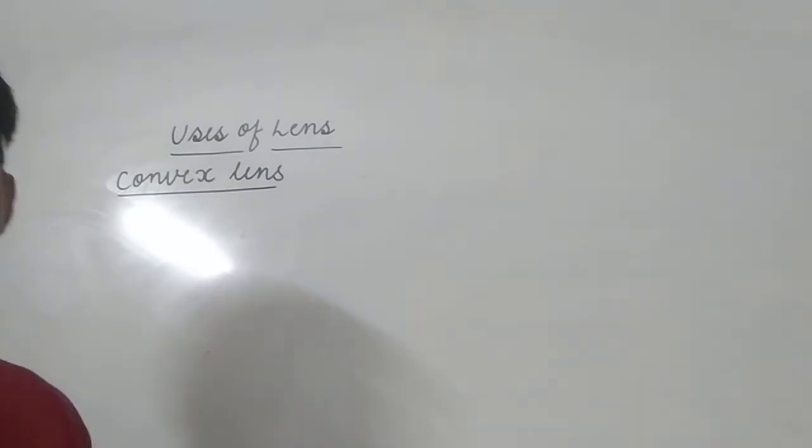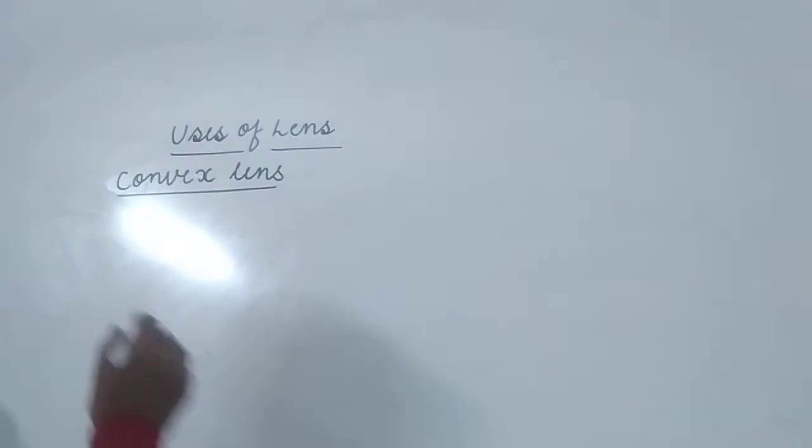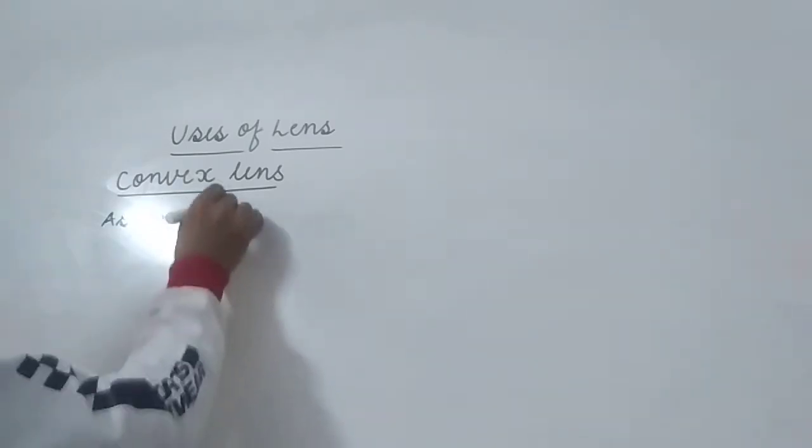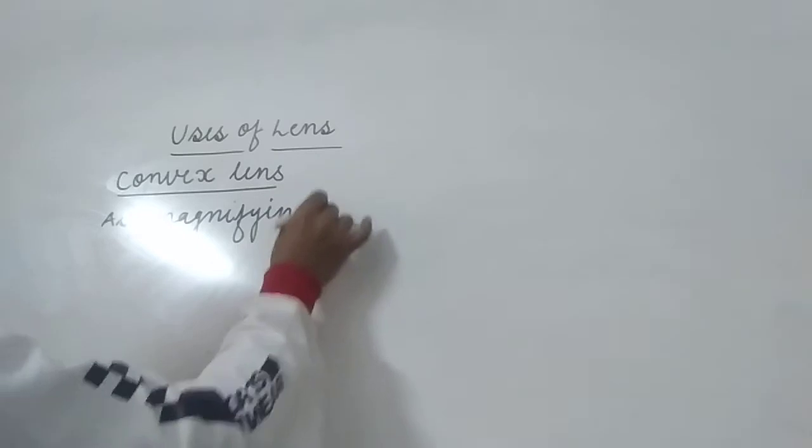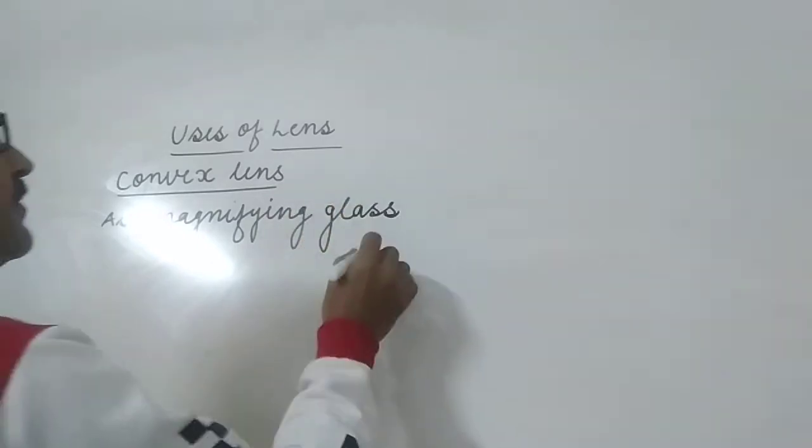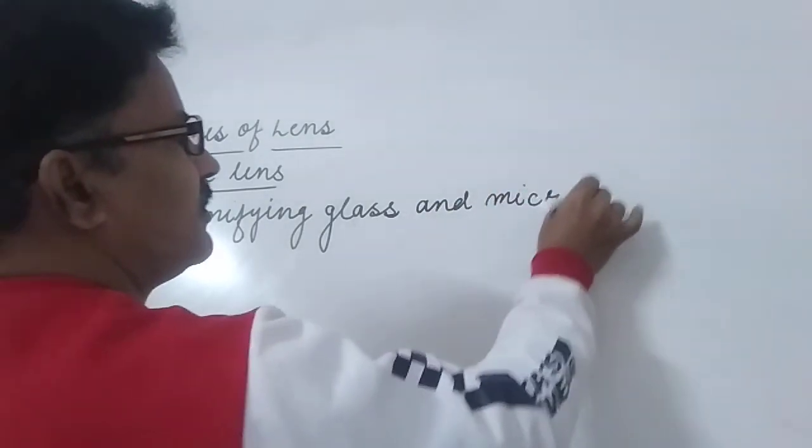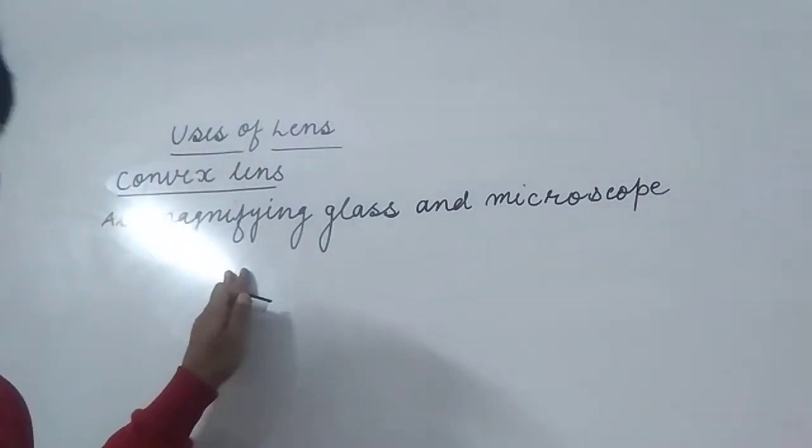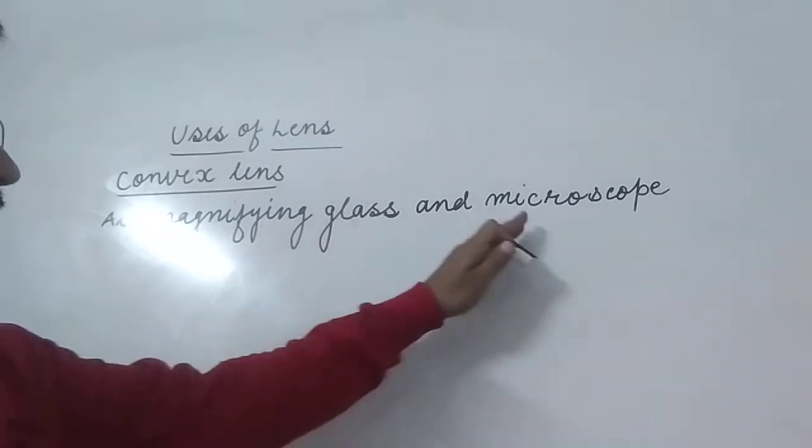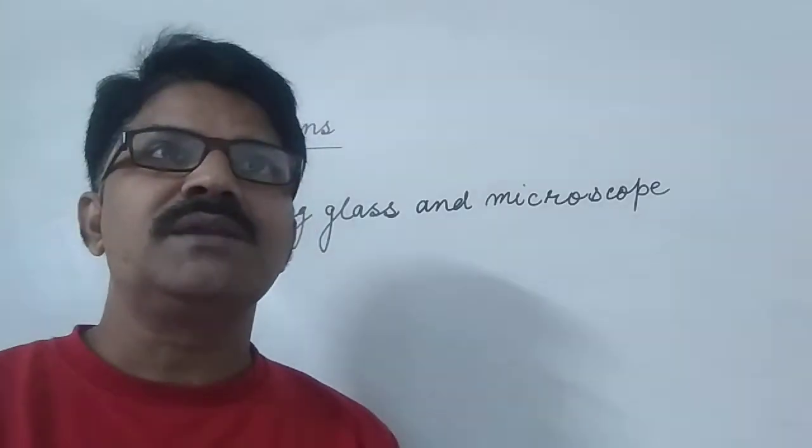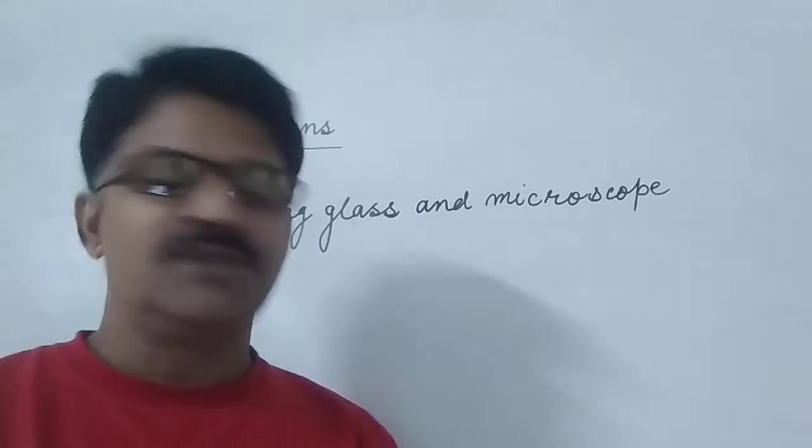Convex lens is used in magnifying glass or simple microscope. Microscopes, it is an instrument which makes the image enlarged of an object.